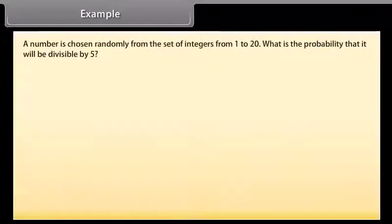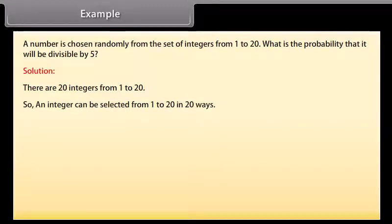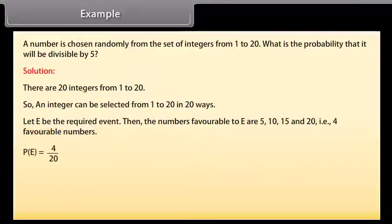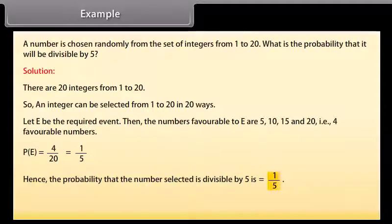Example: A number is chosen randomly from the set of integers from 1 to 20. What is the probability that it will be divisible by 5? Solution: There are 20 integers from 1 to 20, so an integer can be selected in 20 ways. Let E be the required event. Then the numbers favourable to E are 5, 10, 15, and 20 — that is, 4 favourable numbers. P(E) = 4/20 = 1/5. Hence, the probability that the number selected is divisible by 5 is 1/5.